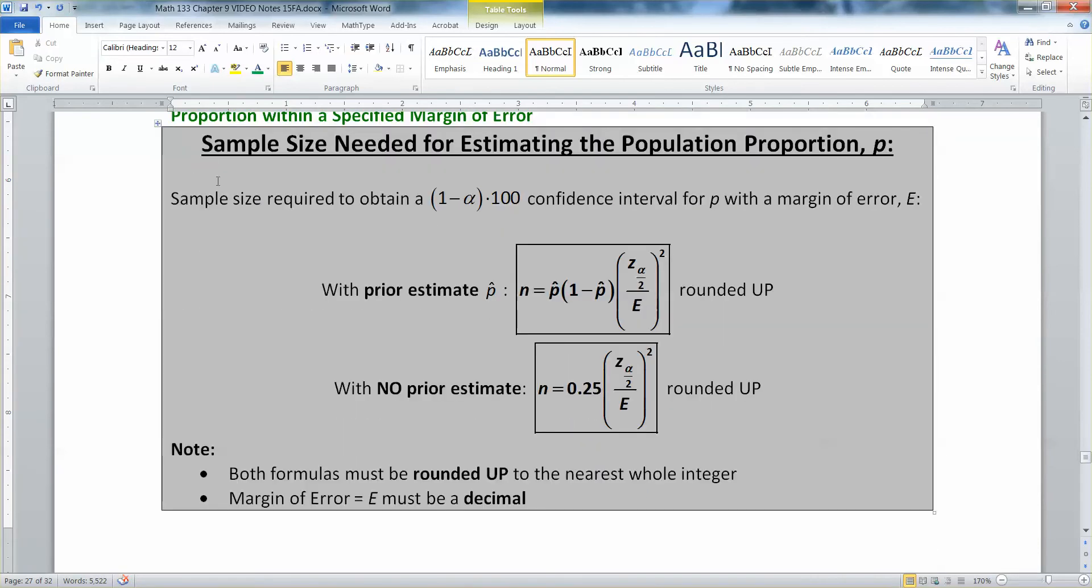These are when you want to estimate a population proportion, like from a survey. What proportion of people are going to give away Halloween candy this year? What proportion of people believe in UFOs? You have two formulas: one where you have a prior estimate given to you, so you have some old data set or some old value, and then you can use that value p-hat. And then you have ones where you don't have a prior estimate, and then you're stuck using this formula.